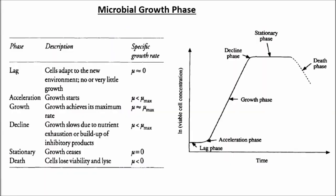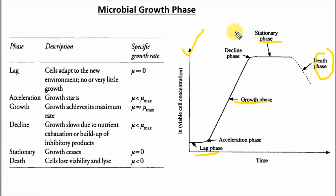Microorganisms are a very specific kind of organism which follows a very specific pattern of growth. As you can see from the diagram, there are basically four major phases of microbial growth: lag phase, exponential phase, stationary phase, and death phase. Two minor phases are the decline phase and acceleration phase. The decline phase is also known as the deceleration phase.